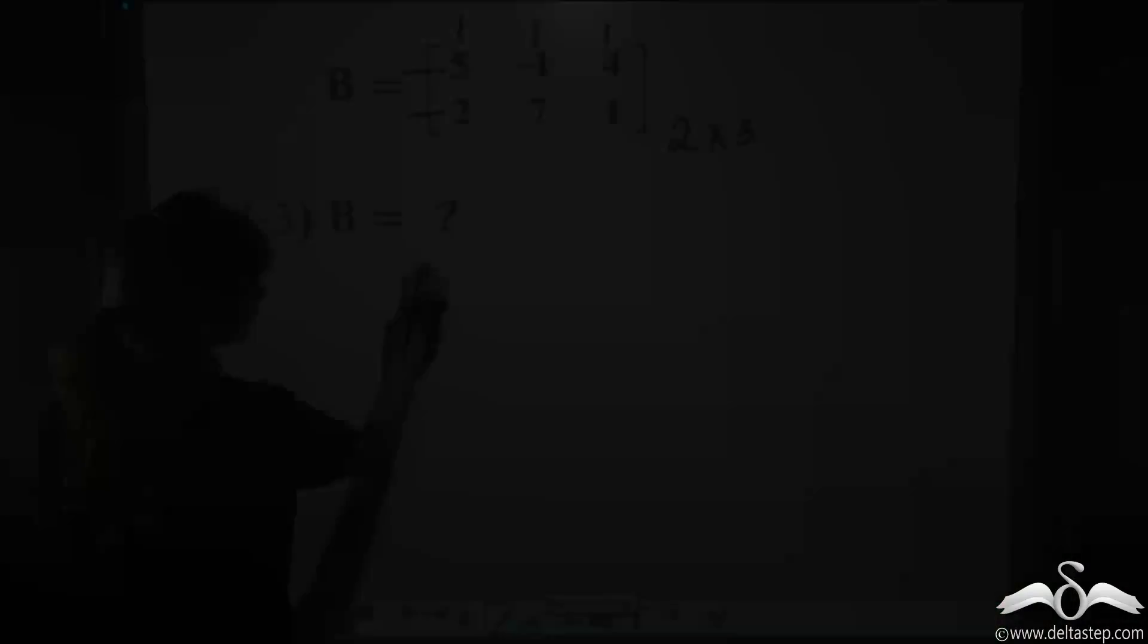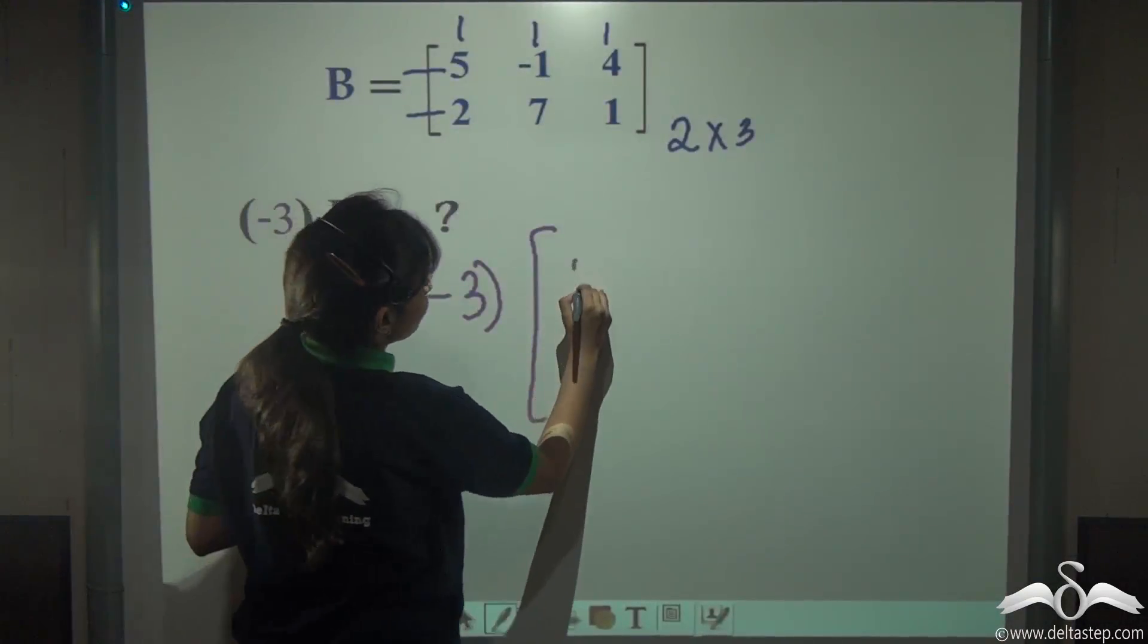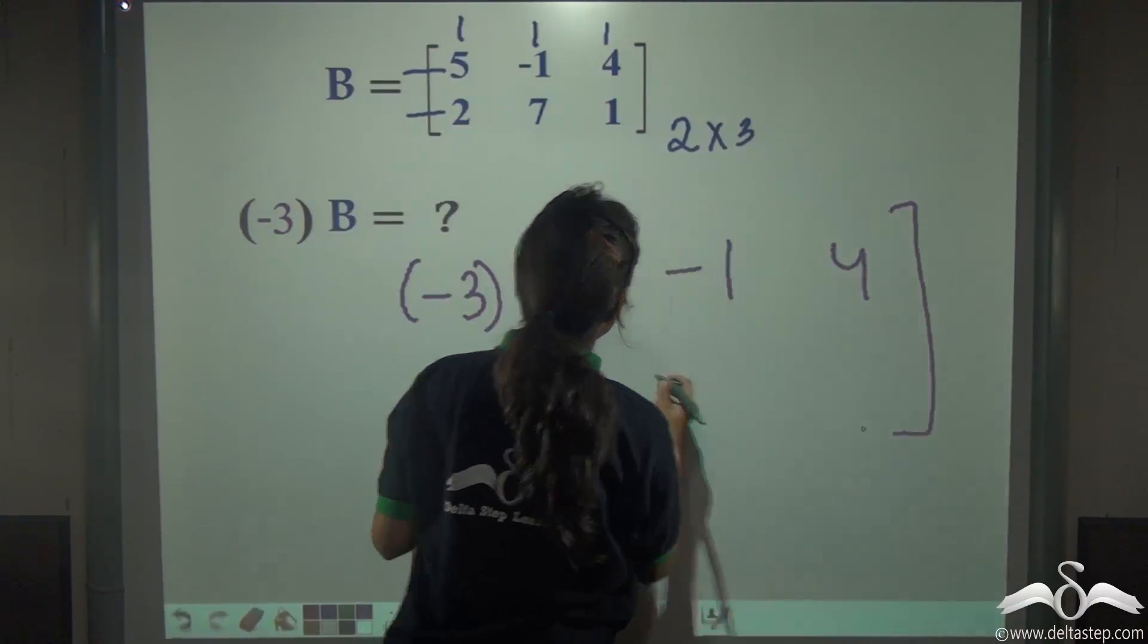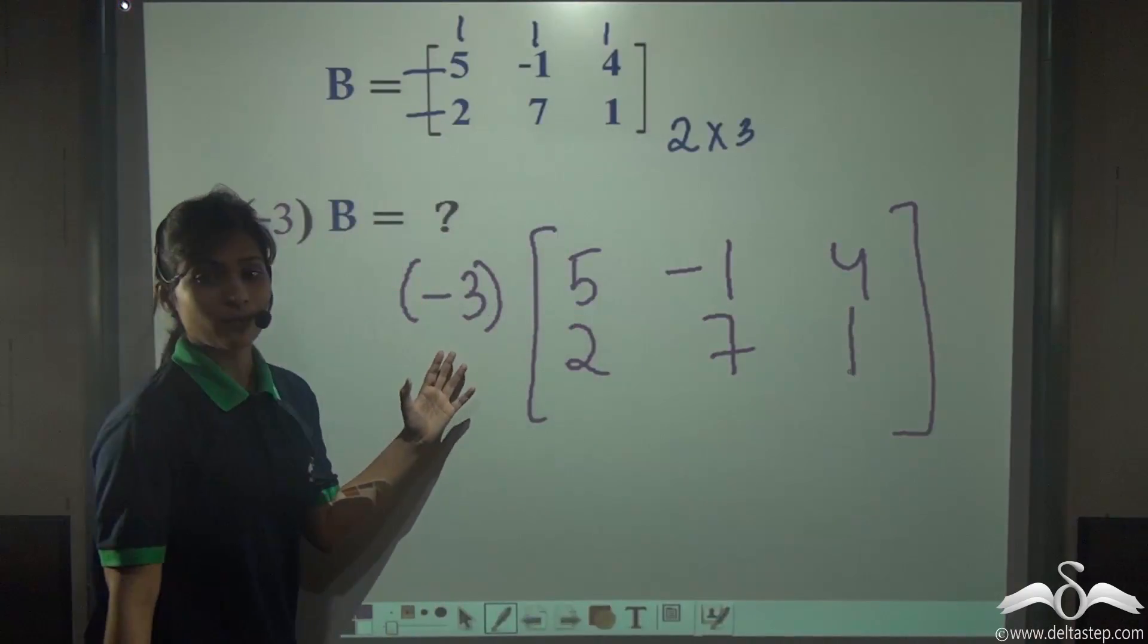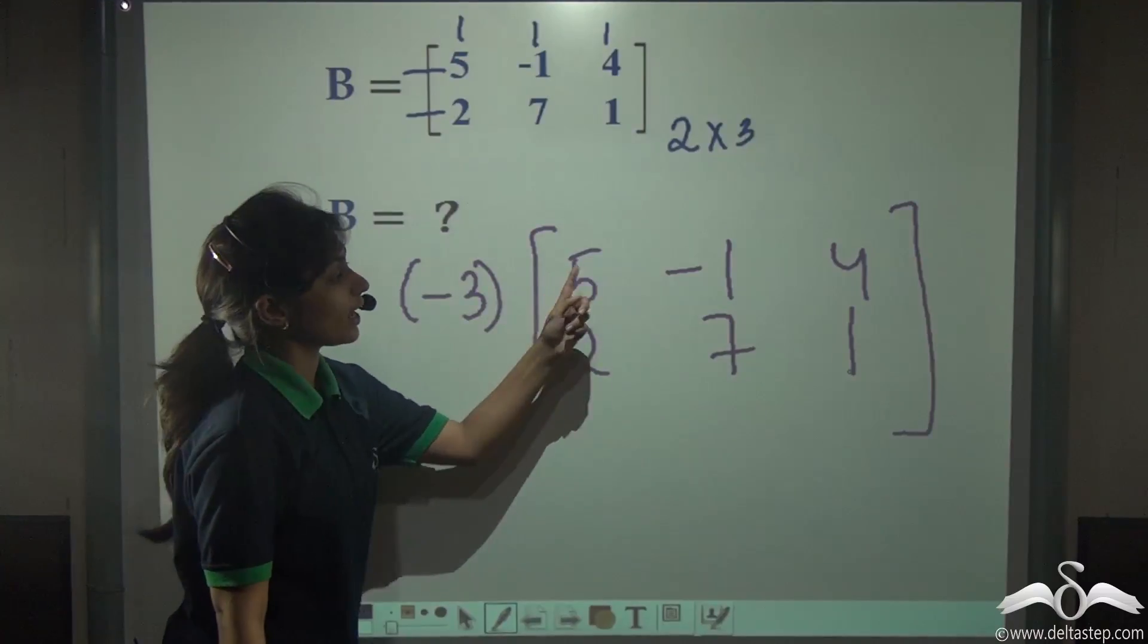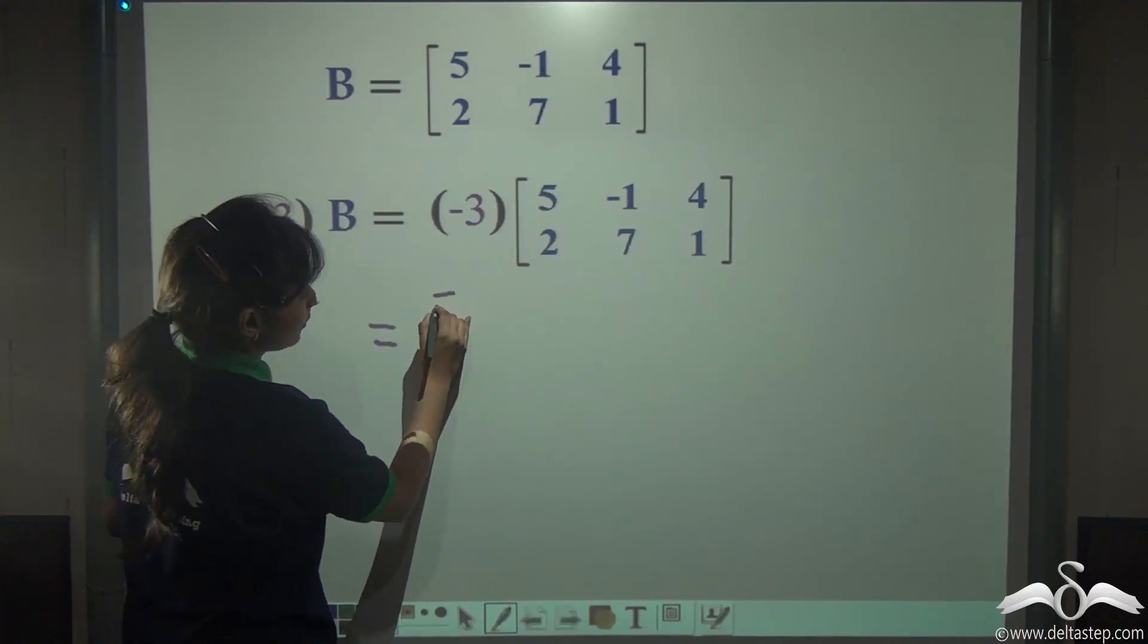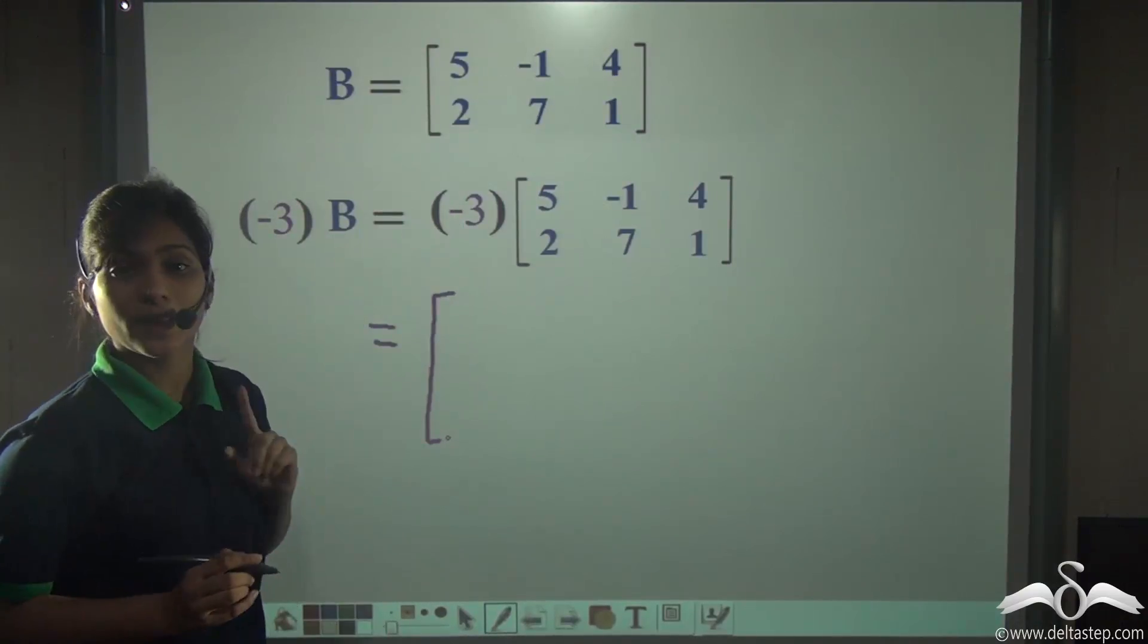Now, just like we did the previous one, start doing this: minus 3 into this matrix, that is [5, -1, 4, 2, 7, 1]. I need to multiply this number with all the entries inside the matrix. Remember, I will take this sign as well. This sign cannot be ignored.